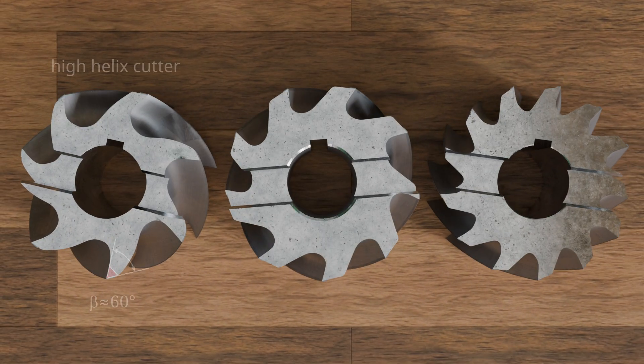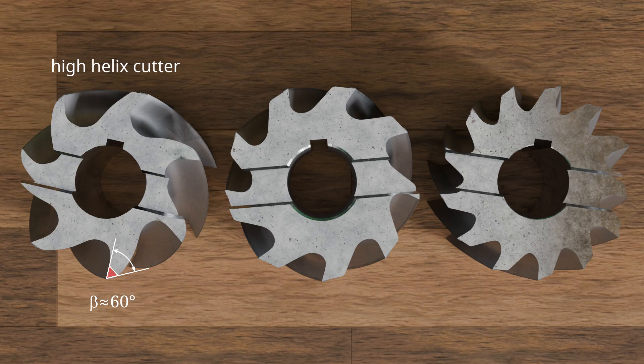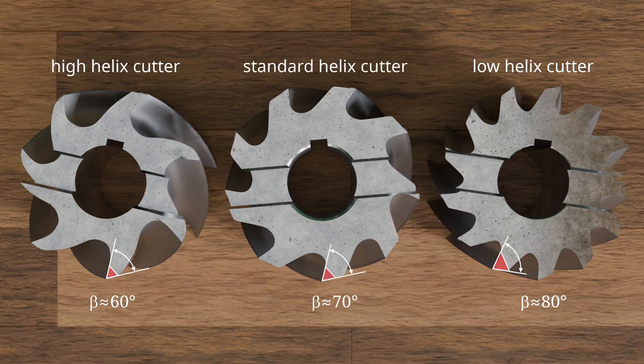For so-called high-helix cutters, intended for soft materials, the wedge angle is relatively small at approximately 60 degrees. The wedge angles of low-helix cutters, intended for hard materials, are around 80 degrees, while standard helix cutters for medium-hard materials fall in the range of about 70 degrees.